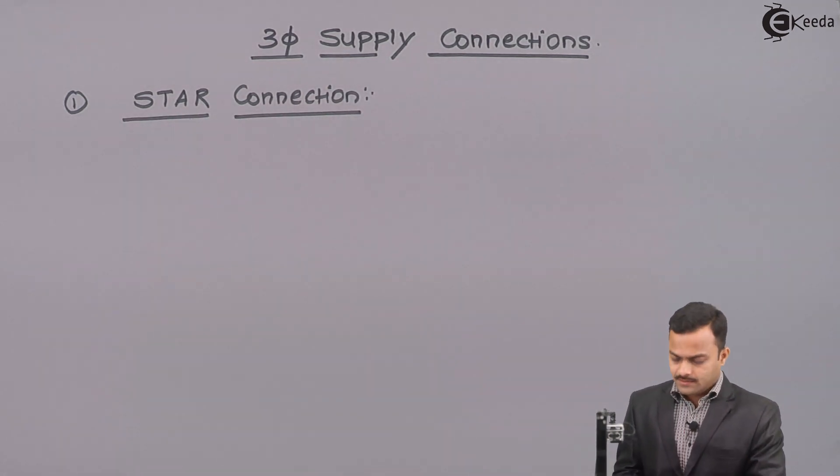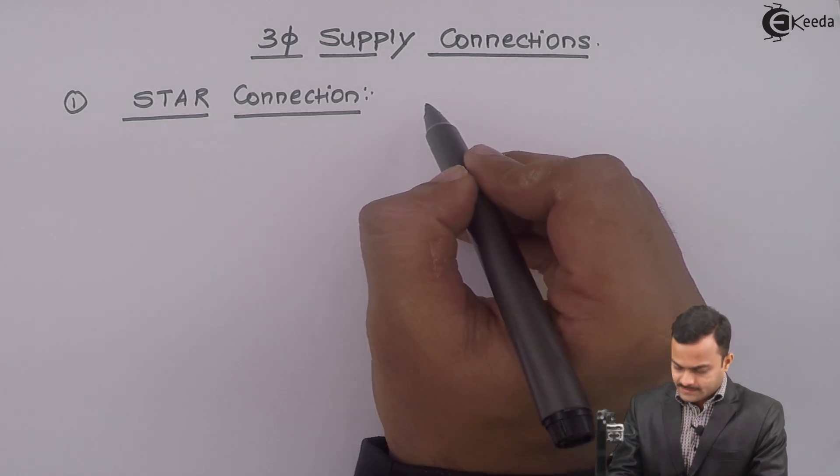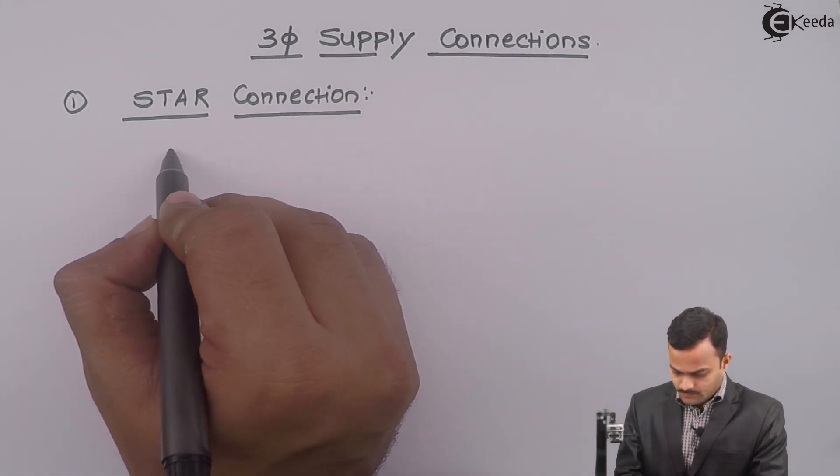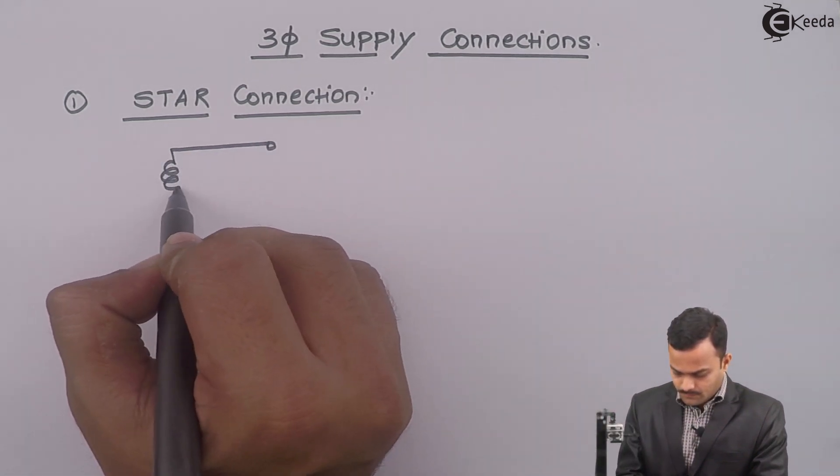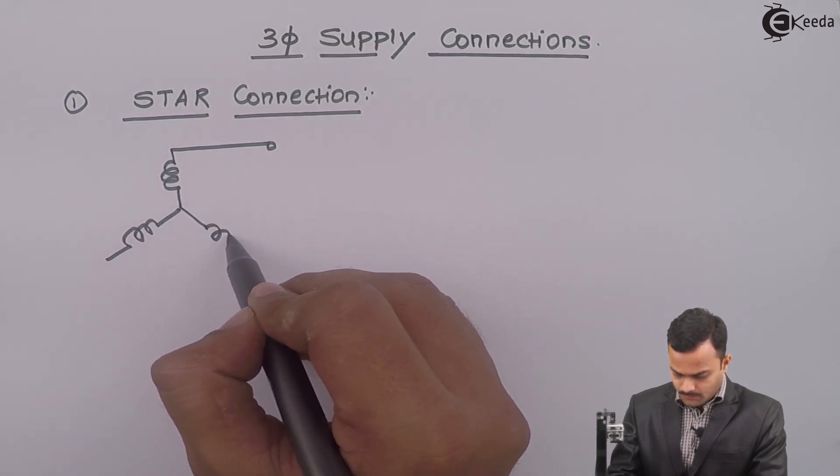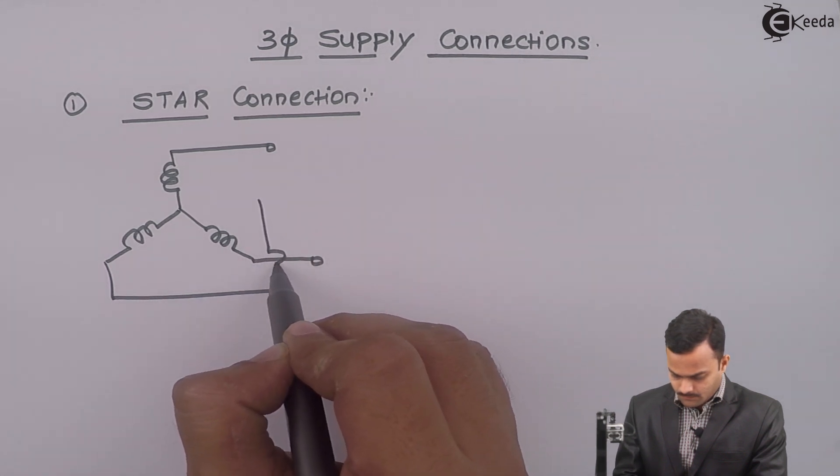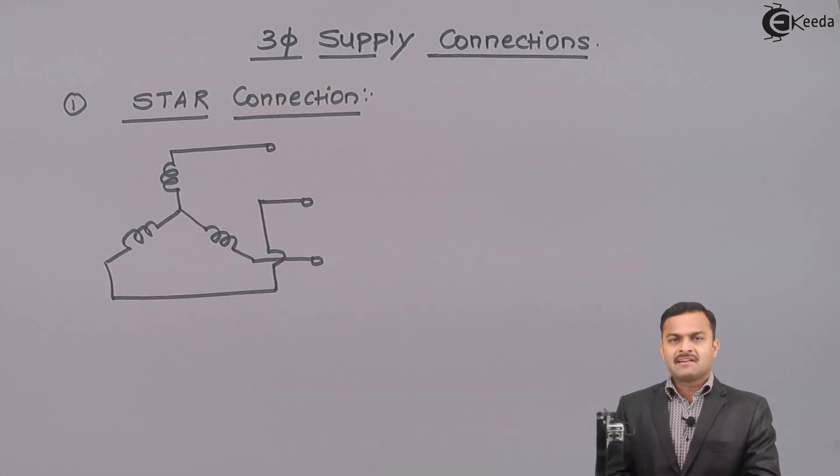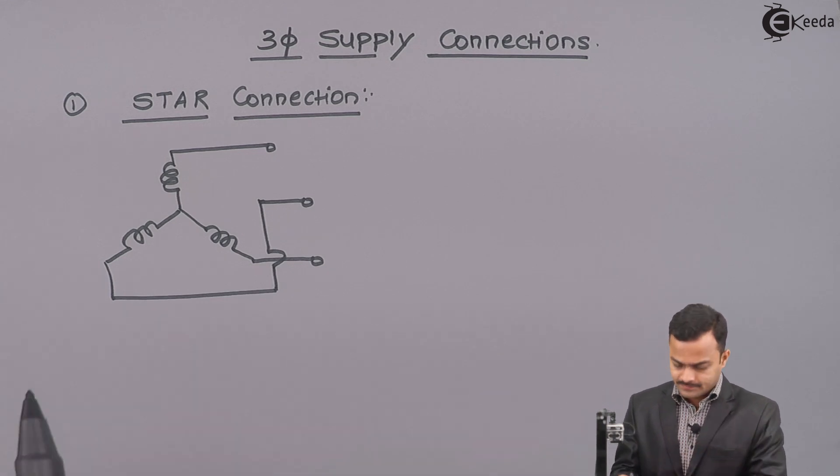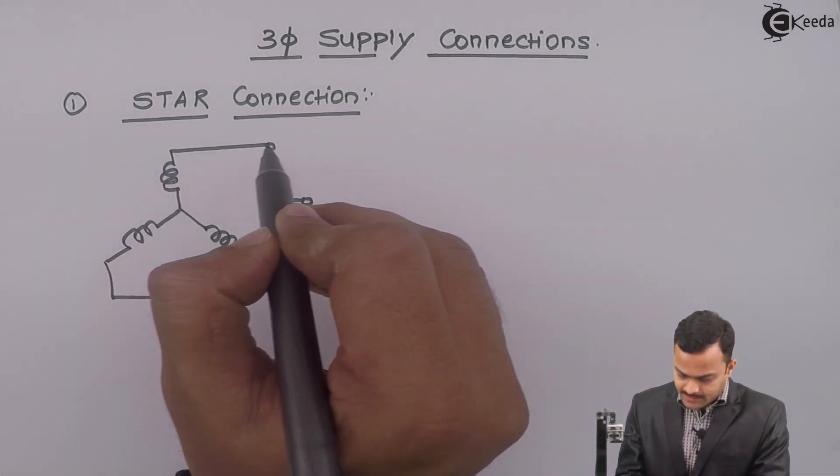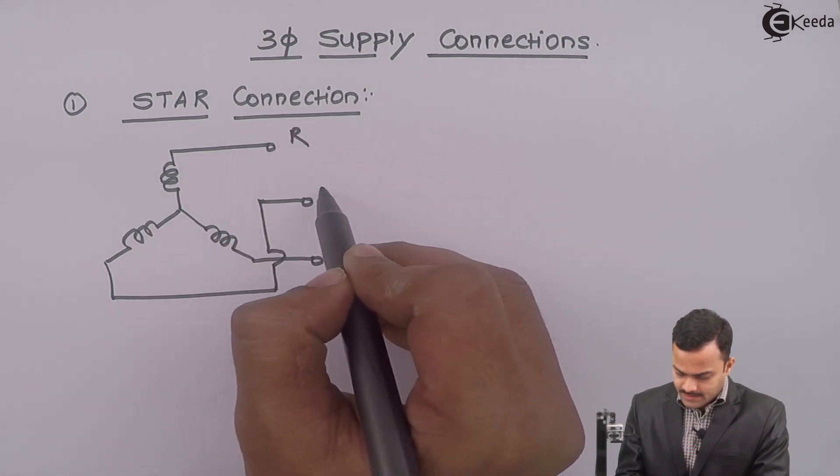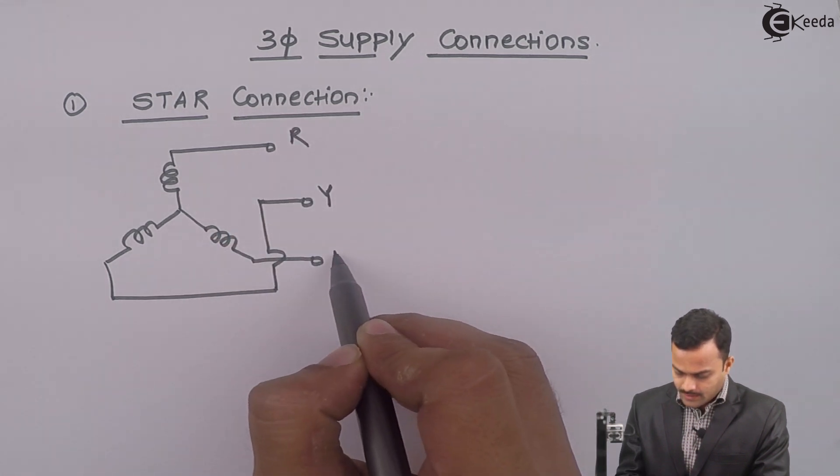In star connection, the circuit will be like this. We are having three windings connected such a way that one end of each winding is connected together to form a neutral point. Let's take this is R phase, Y and B.